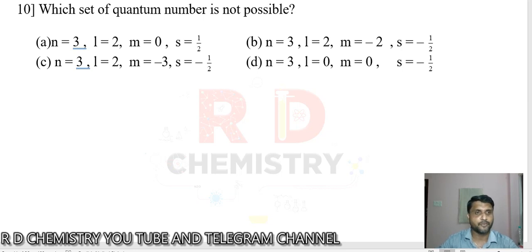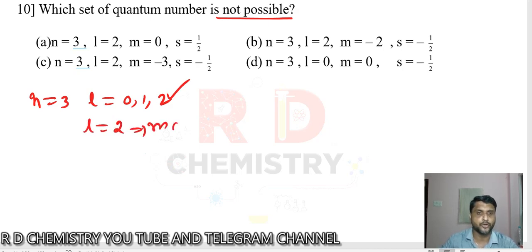Question number ten: Which of the following set is not possible? Let's see the first one. When n = 3, l = 0, 1, and 2, so 2 is possible. When l = 2, m = 0, plus or minus 1, and plus or minus 2. So m = 0 is possible. When m = 0, s is either plus half or minus half. So first one is possible.